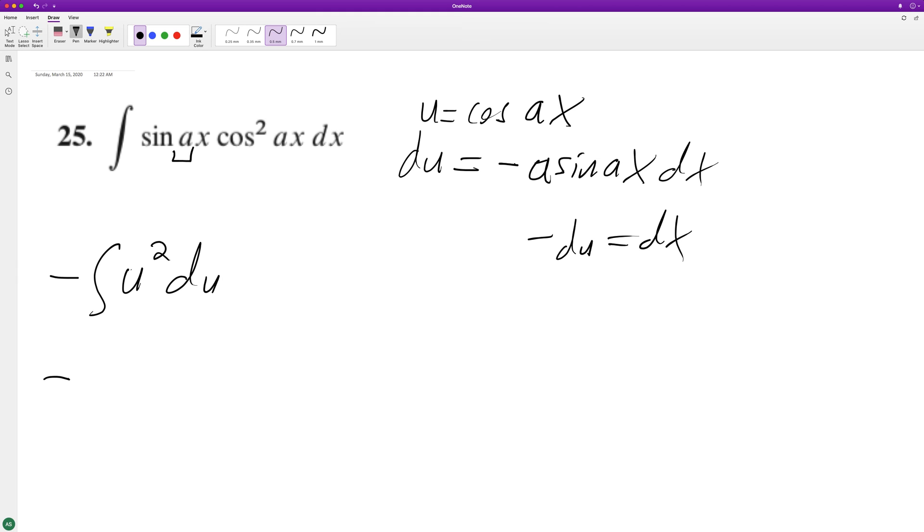We're going to get negative u cubed over three plus C. And when we substitute back in, we end up with negative cosine ax cubed over three plus C.